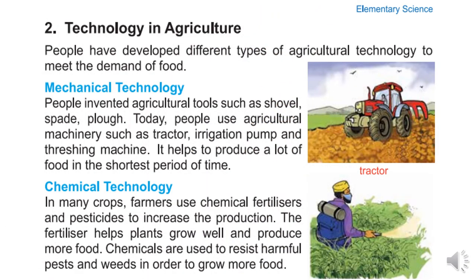Technology and agriculture: People have developed different types of agricultural technology to meet the demand for food. Using mechanical energy, people invented agricultural tools such as shovel, spade, and plough. Today, people use agricultural machinery such as tractors, irrigation pumps, and threshing machines. It helps to produce a lot of food in the shortest period of time.